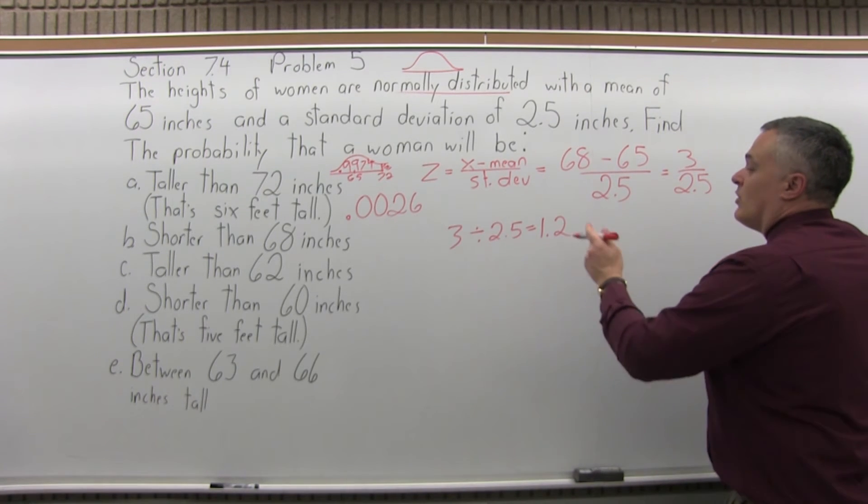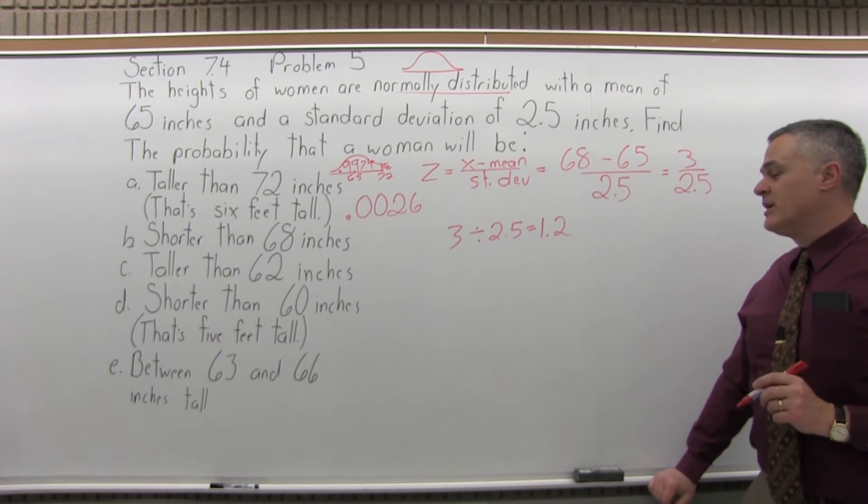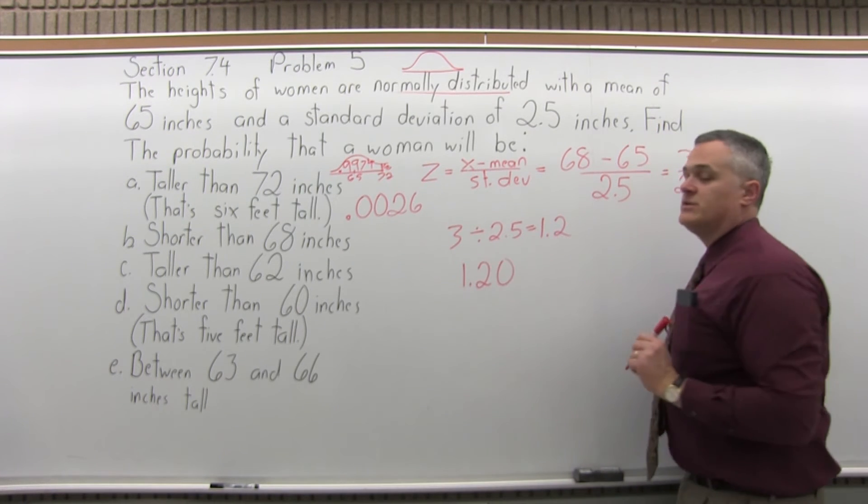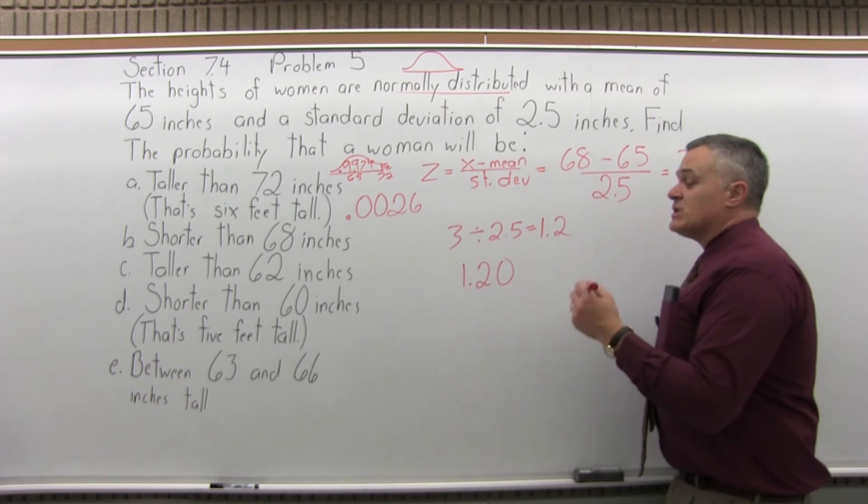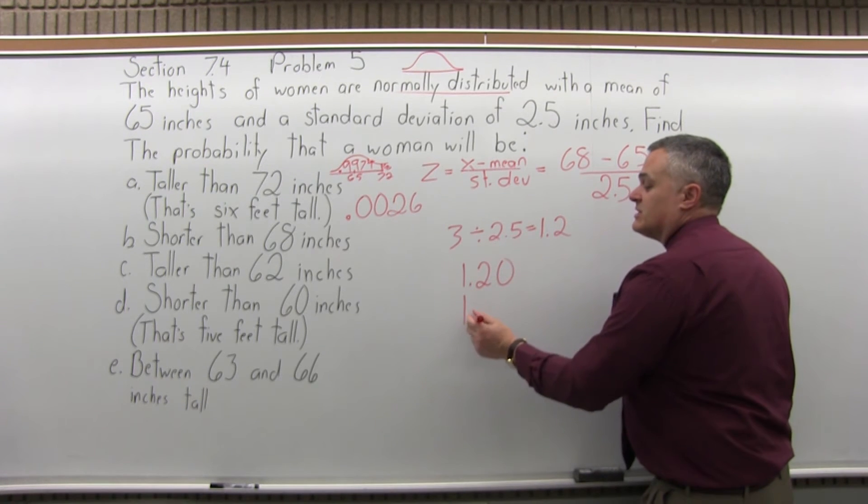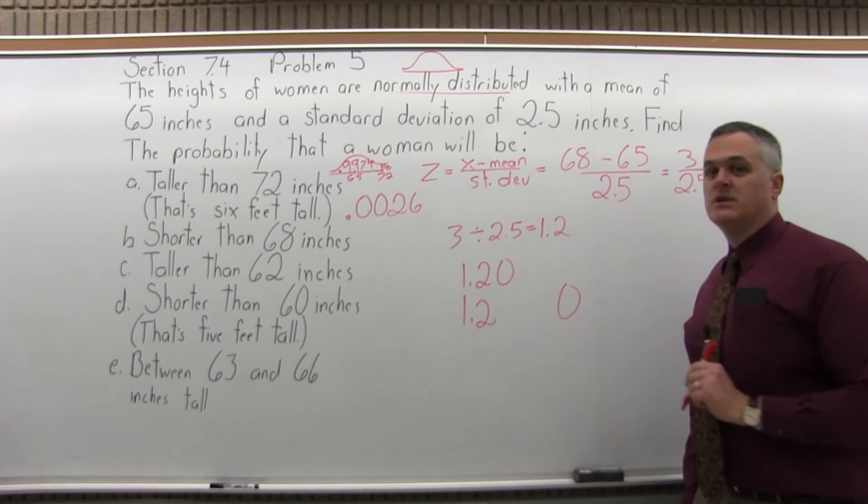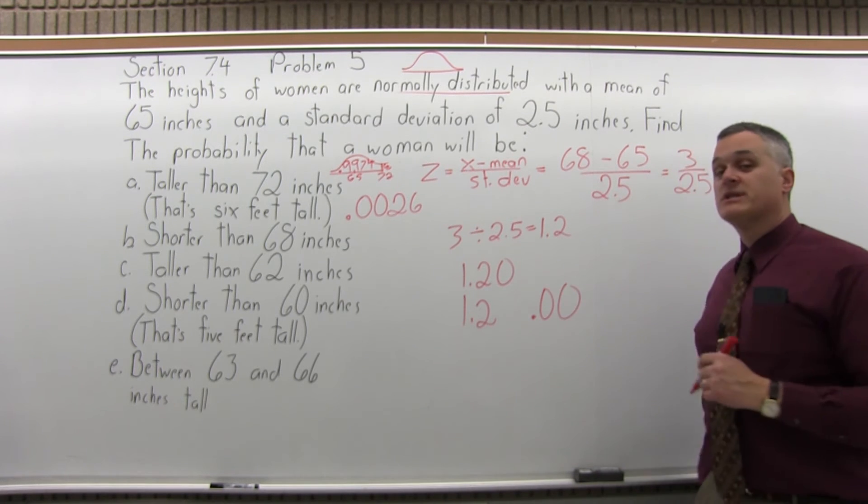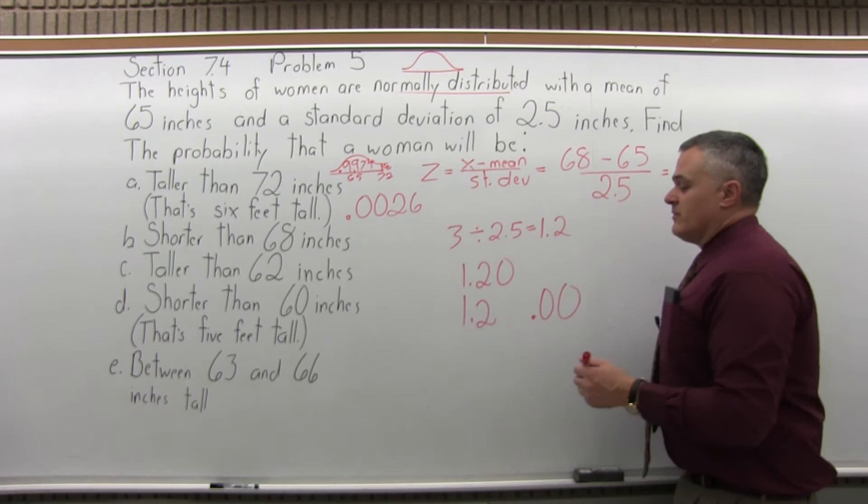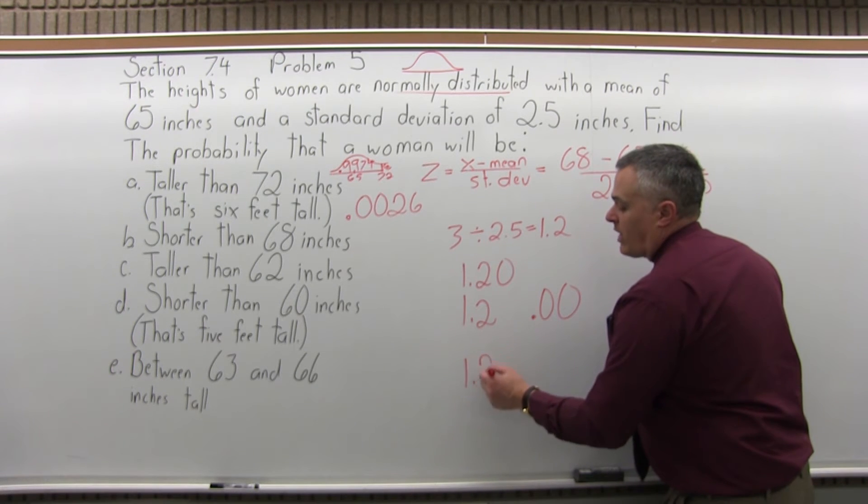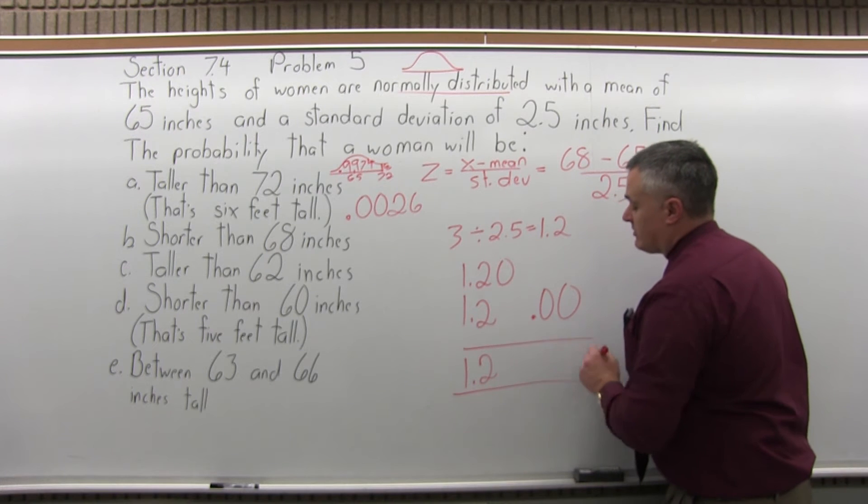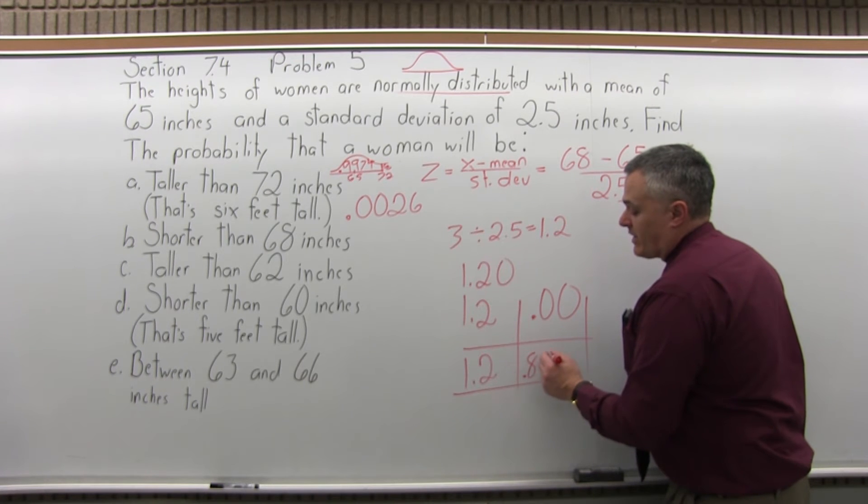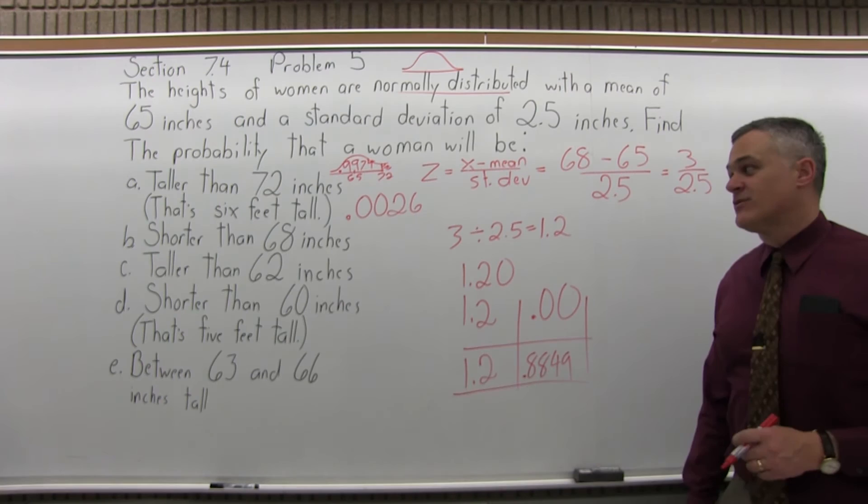So now we want to look up 1.2 in the standard normal chart. Write it as 1.20, then split the number as 1.2 and 0. Put a 0.00 in front of the rightmost digit. Now go to the 1.2 row of the chart, the 0.00 column, which will be the first or leftmost column, and they will intersect at 0.8849. That's the answer from the chart.